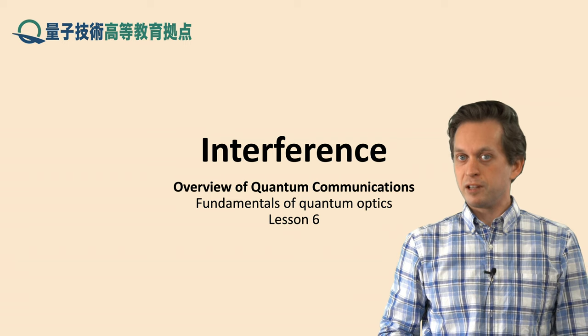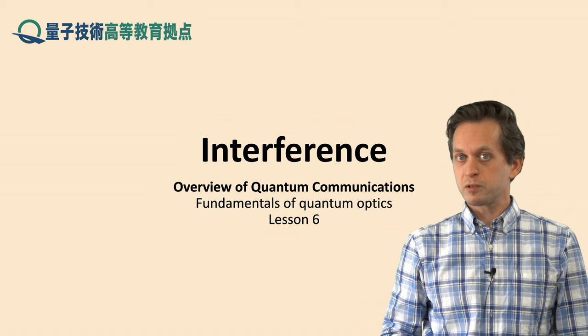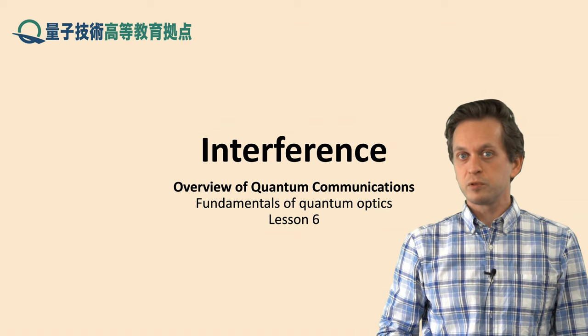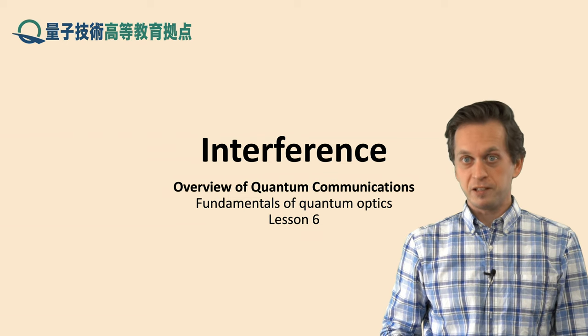We will start by considering interference with normal single frequency waves, when they superpose, what happens to them. Then we will move to interference of single photons and we will conclude with interference of qubits. So let's begin.